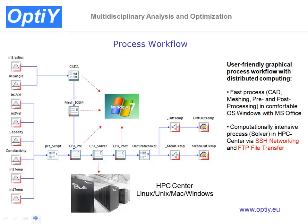Inside the graphical workflow of OptiWire, we define the input parameters — the design parameters — and the output parameters as the design goal: the mean and the differential temperature of the water at the outlet pipe. With predefined nodes, we can couple to the CAE simulation software.